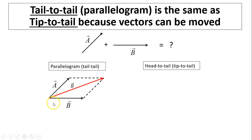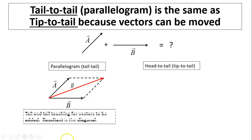In the parallelogram method, we draw a parallelogram and the diagonal is the resultant. Tail-on-tail touching for vectors to be added, and the resultant is the diagonal.